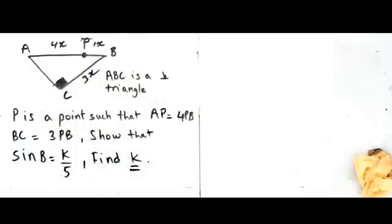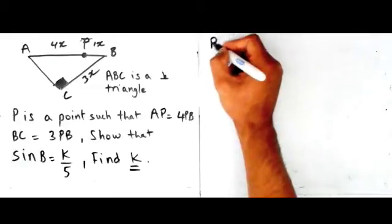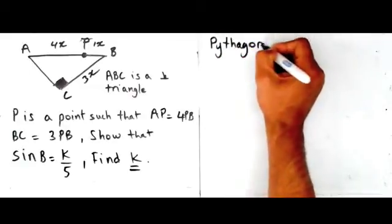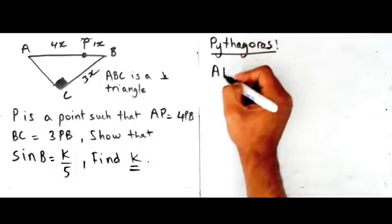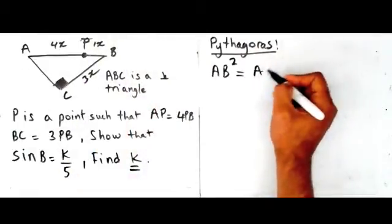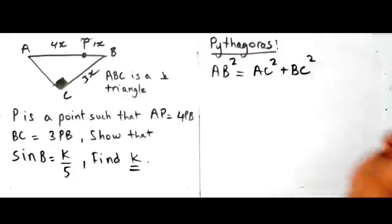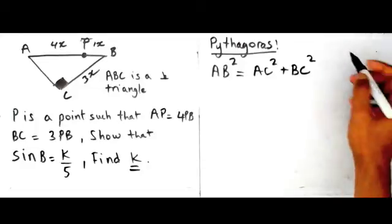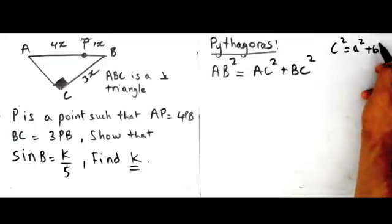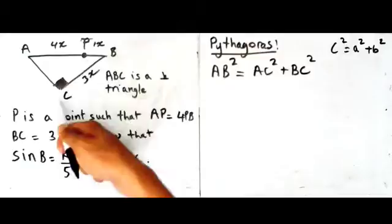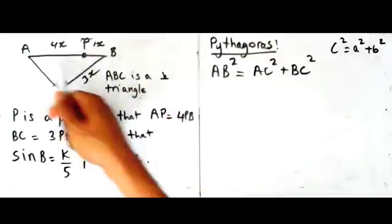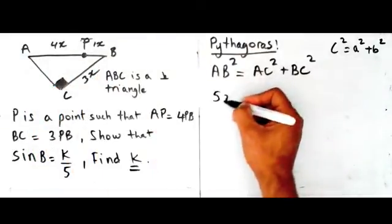Once you've got some lengths, you can see that here we have a right-angle triangle. So what I could do is work out side AC. Using Pythagoras — I know this is a right-angle triangle — AB squared, which is the hypotenuse, is equal to AC squared plus BC squared. AB is 4x plus 1x which is 5x, so I can say 5x squared is equal to AC squared plus 3x squared.